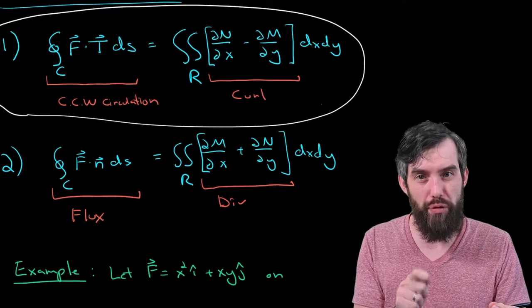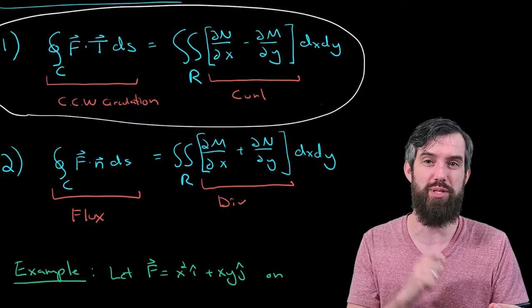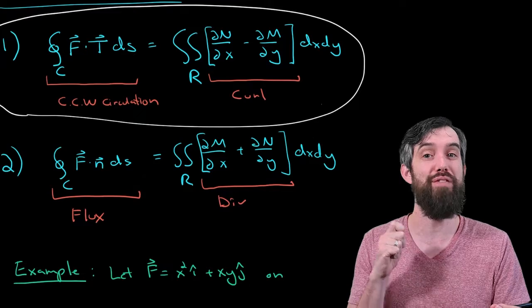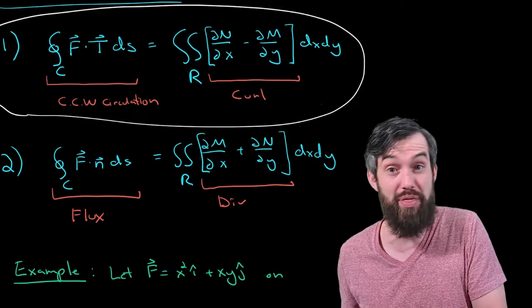So, it's the double integral over the region of the partial of n with respect to x minus the partial of m with respect to y.